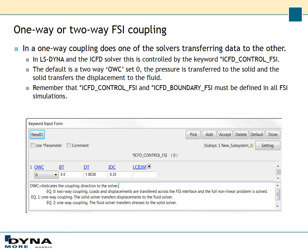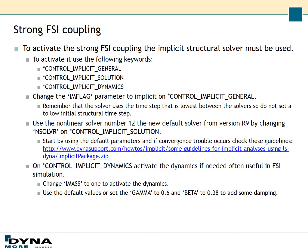If you set OWC to 1, the structure solver will transfer the displacement to the fluid solver. If you set it to 2, the fluid solver will transfer the stresses to the solid solver. Remember that both the *ICFD_CONTROL_FSI keyword and the *ICFD_BOUNDARY_FSI keyword must be defined in all FSI simulations. To activate the strong FSI coupling, you have to use the implicit structure solver, since the fluid is an implicit solver. To activate the implicit structure solver, you use *CONTROL_IMPLICIT_GENERAL and *CONTROL_IMPLICIT_SOLUTION.